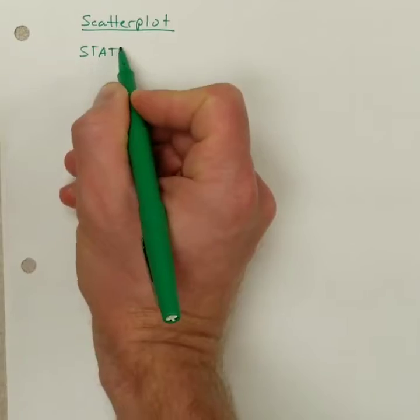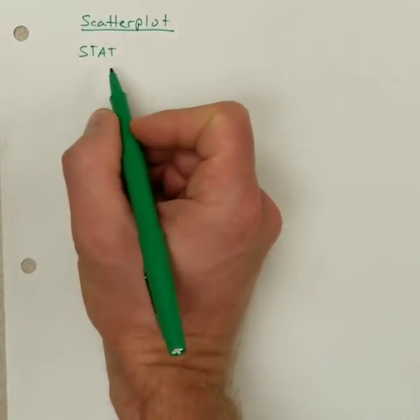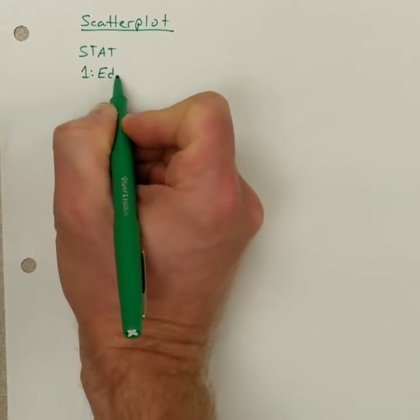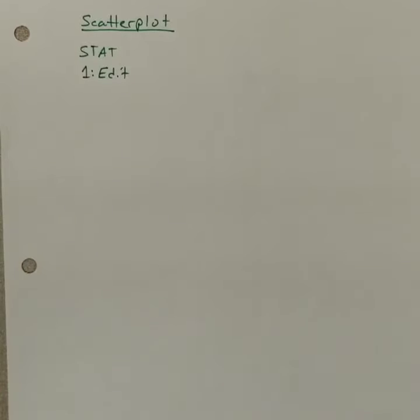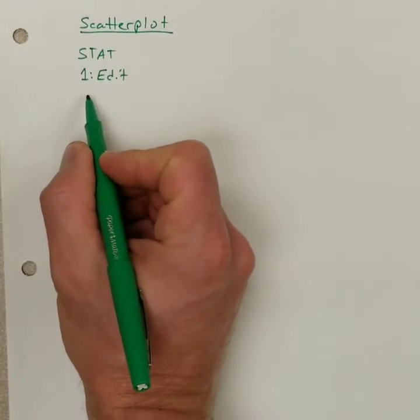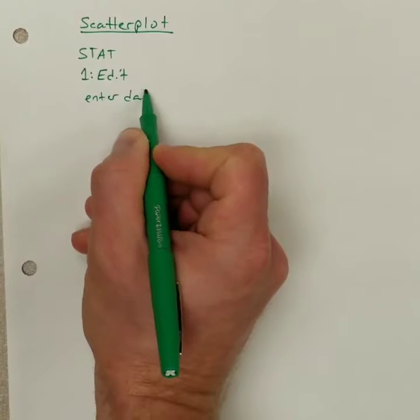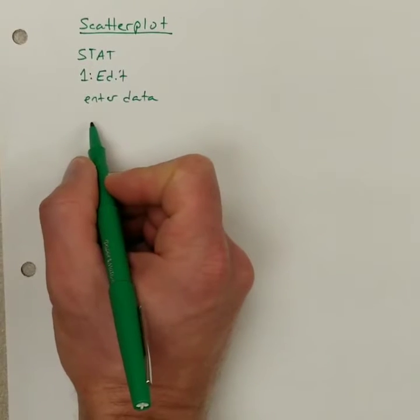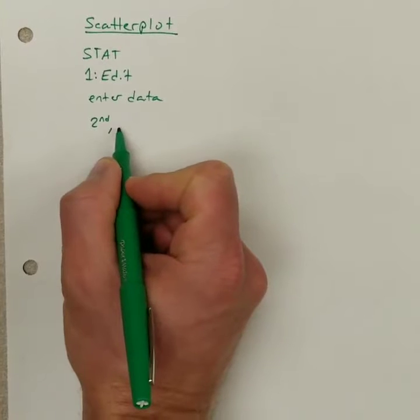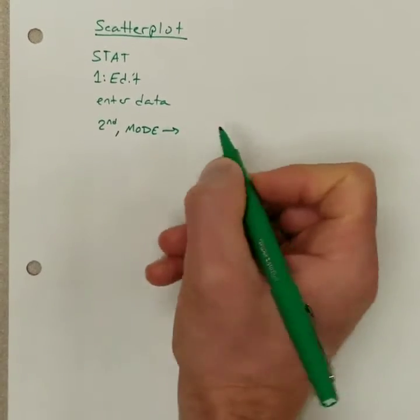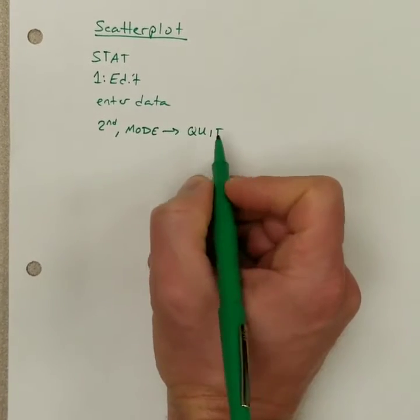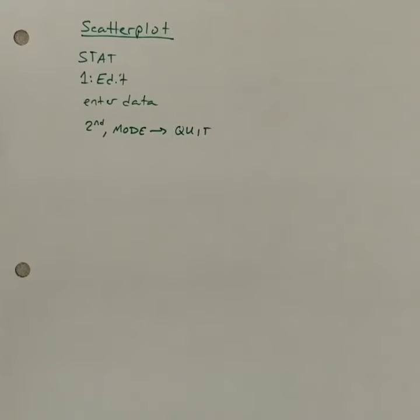So, for the scatter plot, the first thing we have to do is enter the data. So, we hit the stat button. I'm just kind of rehashing what we just did. We hit stat. Then we hit that first option was edit. We had to go into that. And then we had to enter the data. And then once it's entered, you hit 2nd mode in order to quit again. 2nd and mode allows you to quit. So, that's what we've done so far.